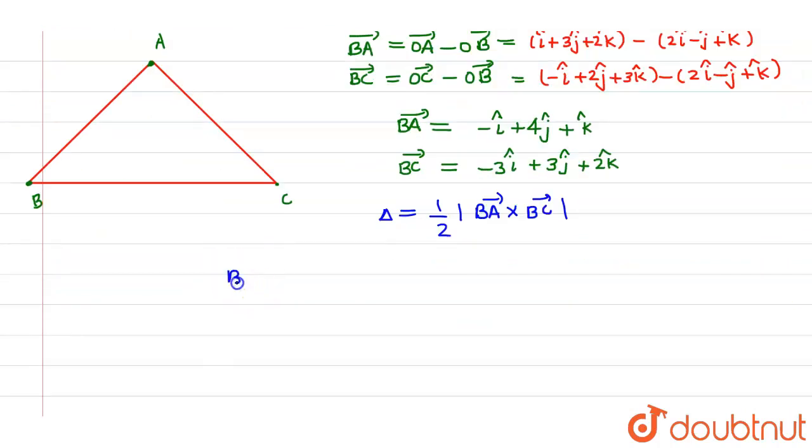Let us first try to find out the value of BA vector cross BC vector. So this value will be given by determinant of i, j, k. Second row will be filled by components of BA vector along i, j, k, which are given by minus 1, 4, and 1.